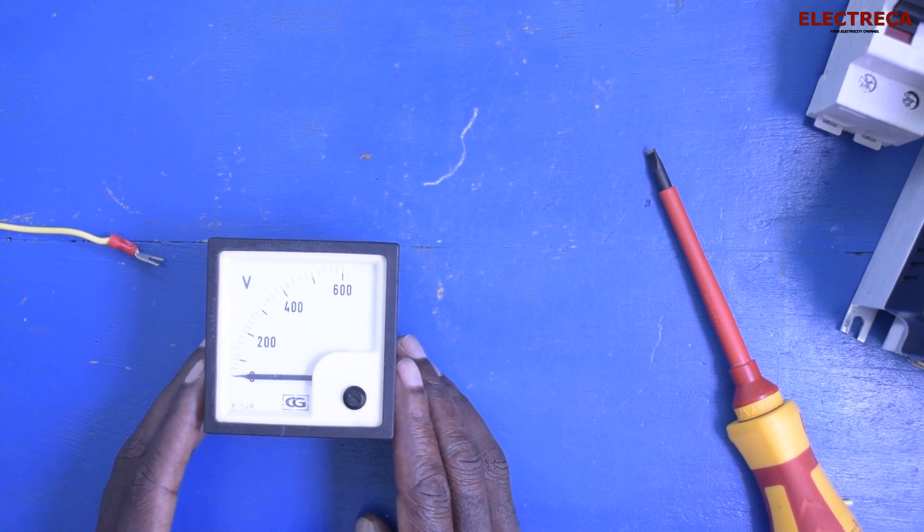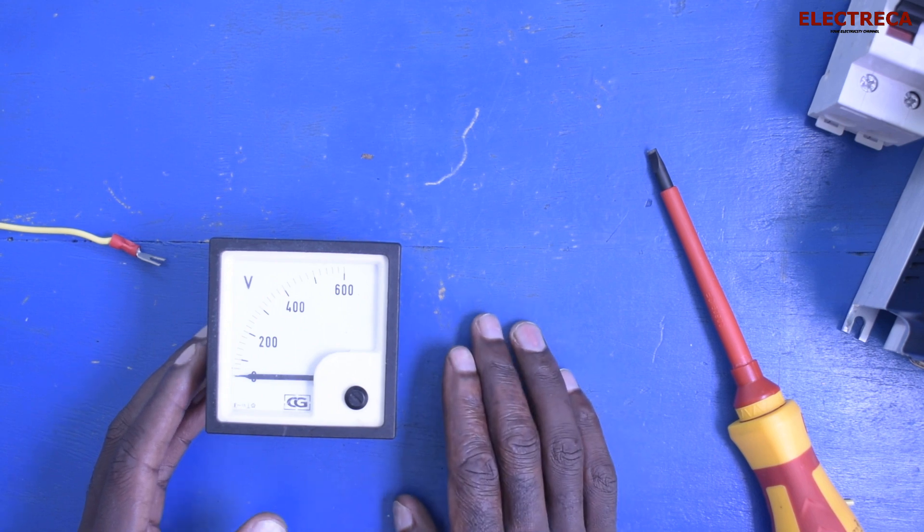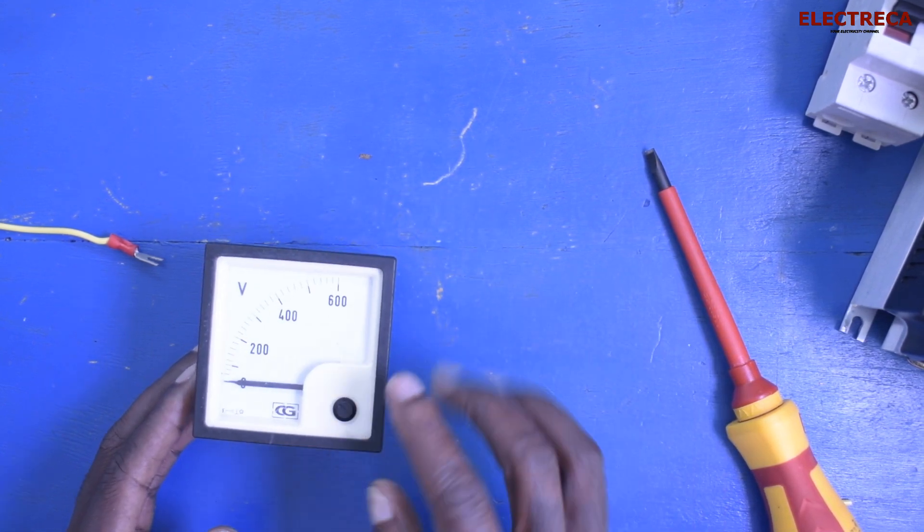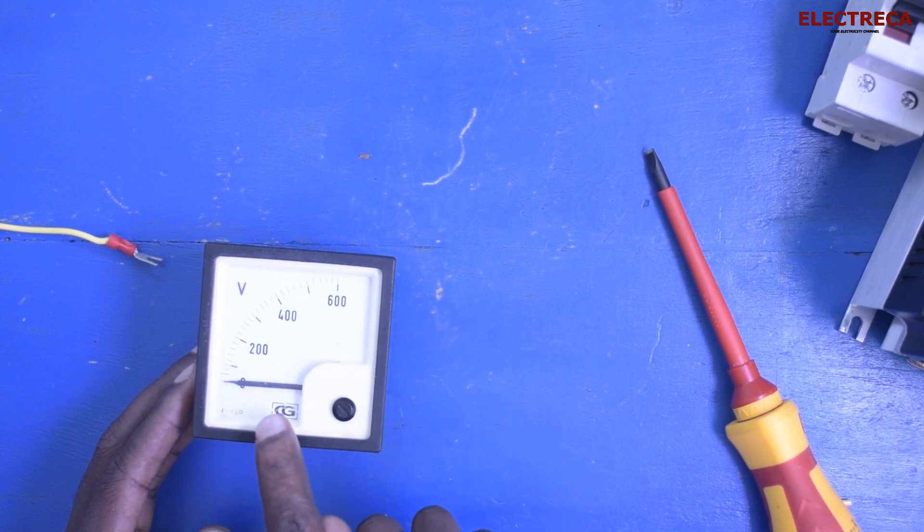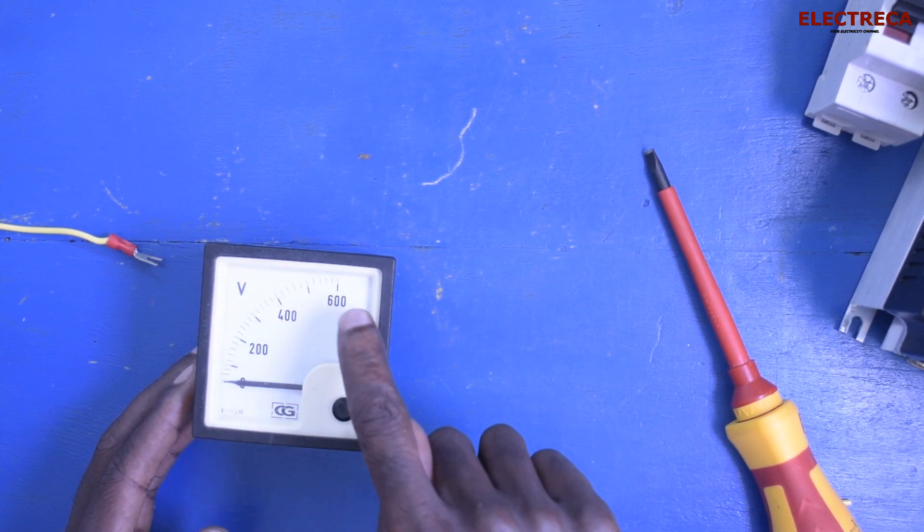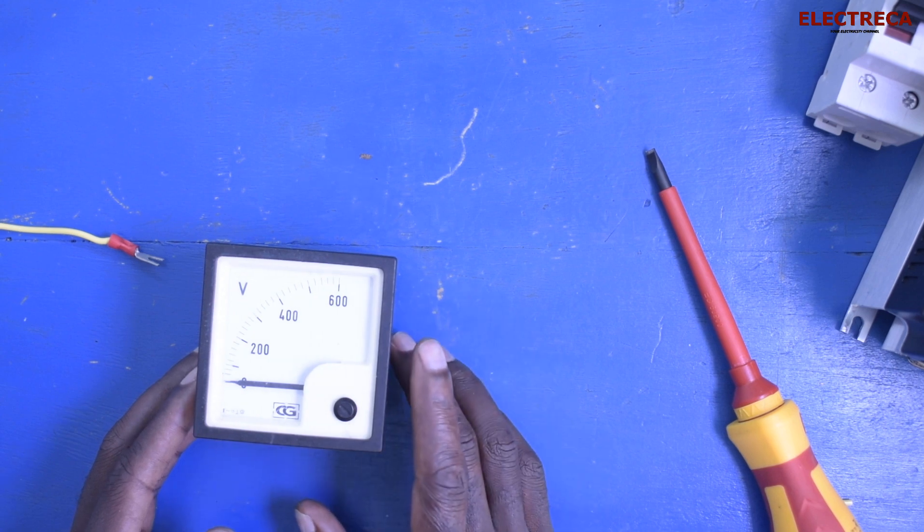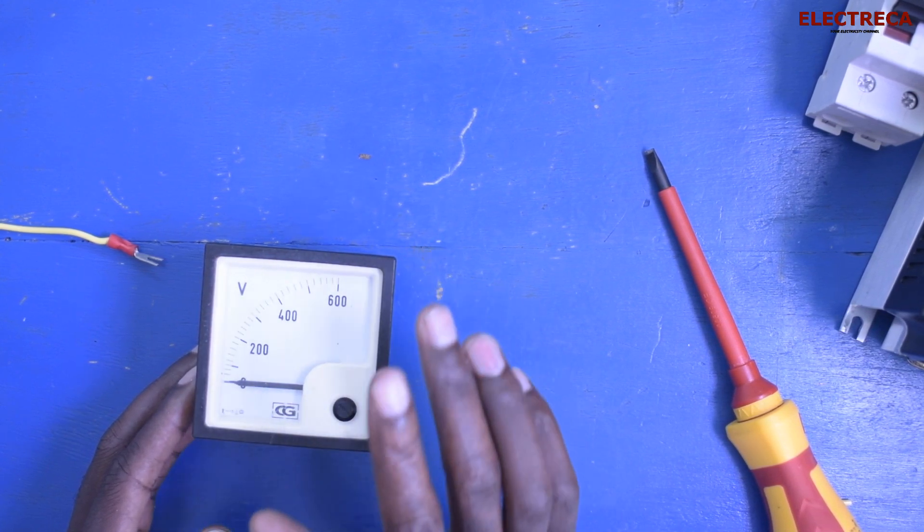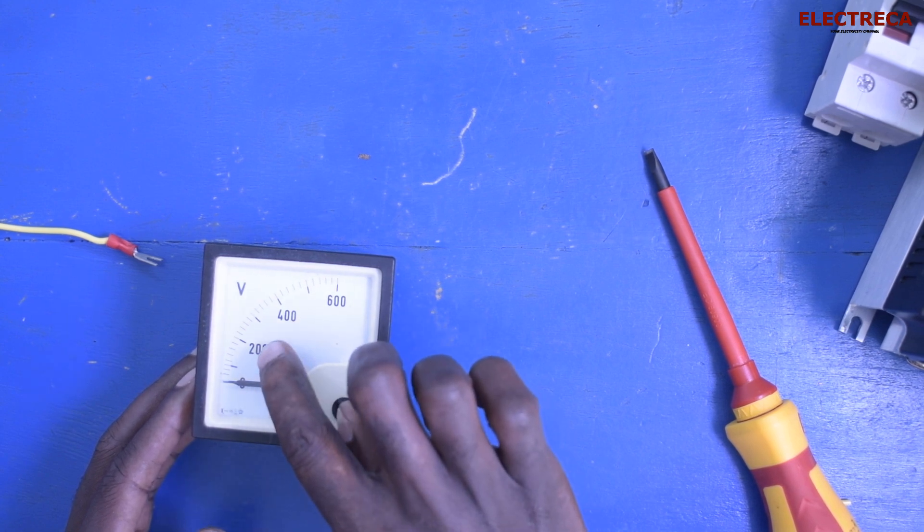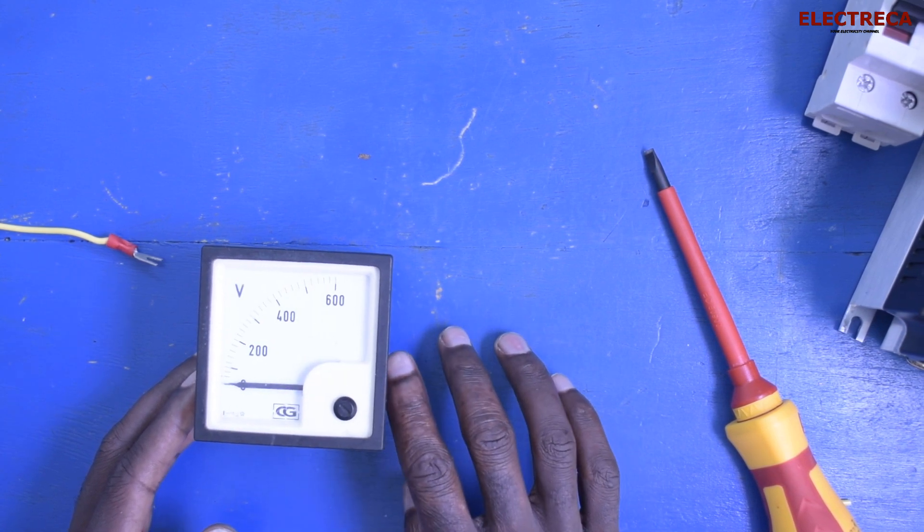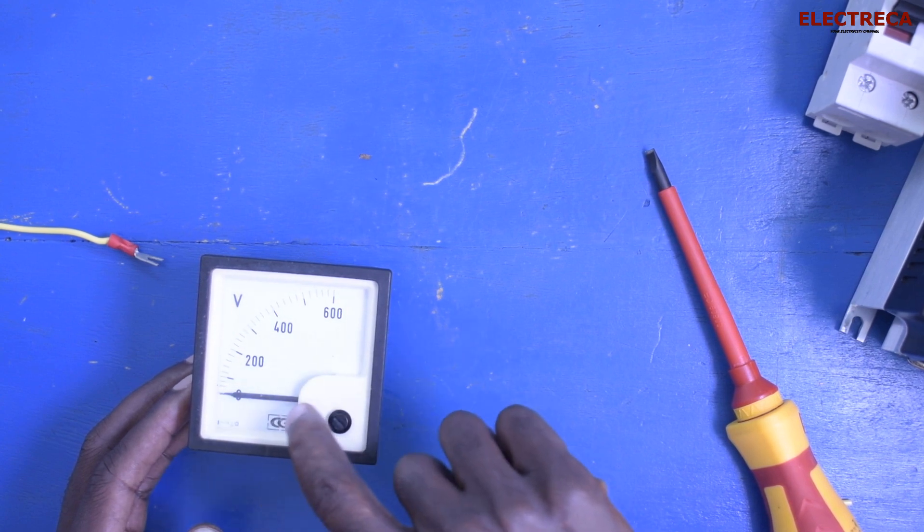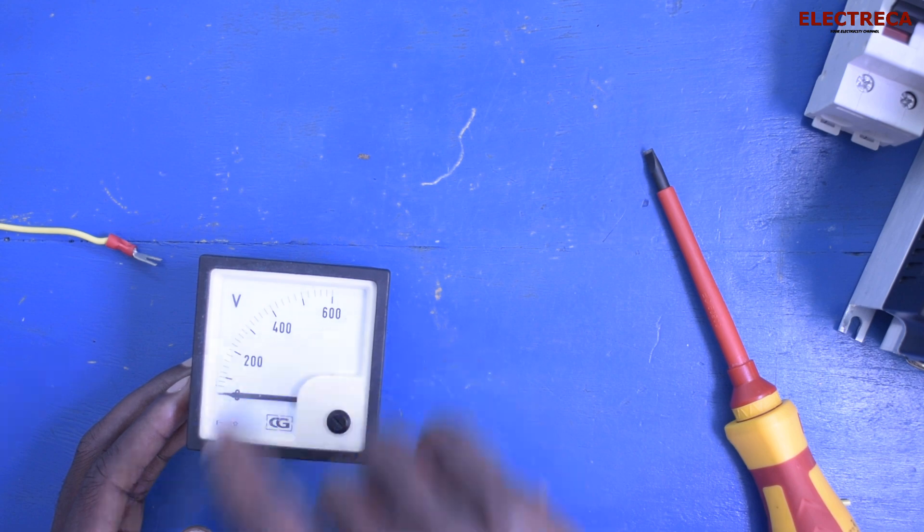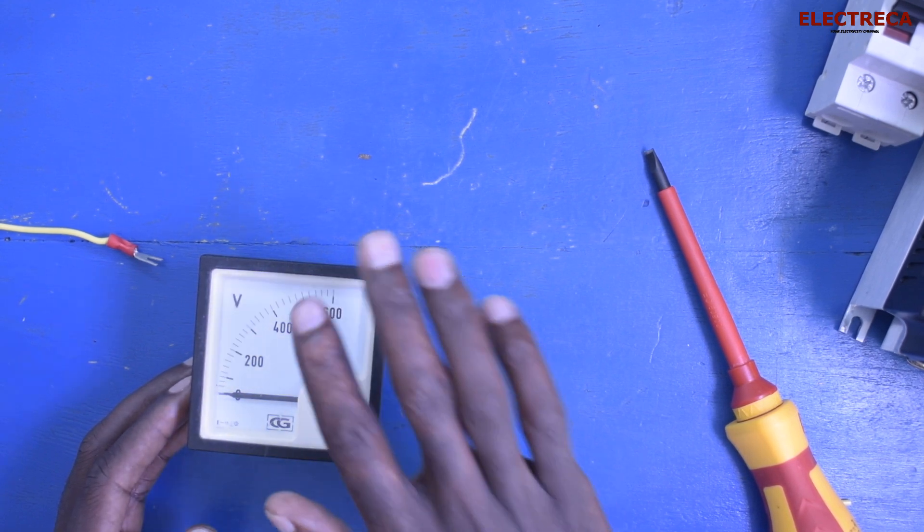If you have this guy on your panel, you're able to tell... Now this one has a scale from zero to 600. You're able to tell if it's 250 volts or 240 volts, you're able to see the deflector when it's pointing around here, or if it is 400 or 600.